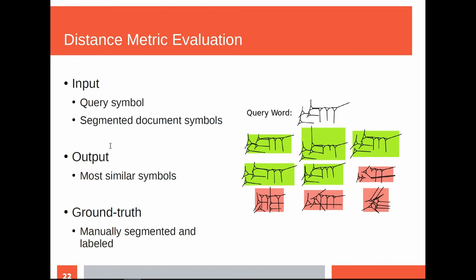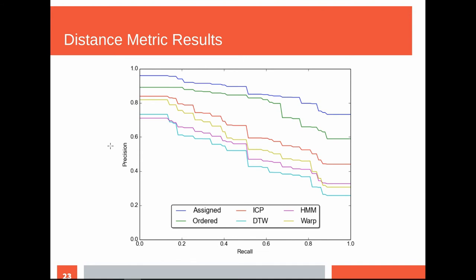How do we evaluate that our distance metric actually works as expected? We have a query symbol which we want to find in a cuneiform tablet, and we have segmented symbols in the tablet. We make a query looking for specific symbols and then check whether the found symbols are those we were looking for. In this graphic, the first five found symbols were correct and the next four were incorrect. We compute the precision-recall ratio: for example, if we want to find 20% of symbols, we can do so with a precision of 90% — 9 out of 10 characters will be correctly found. The other lines indicate different related approaches to finding cuneiform symbols.